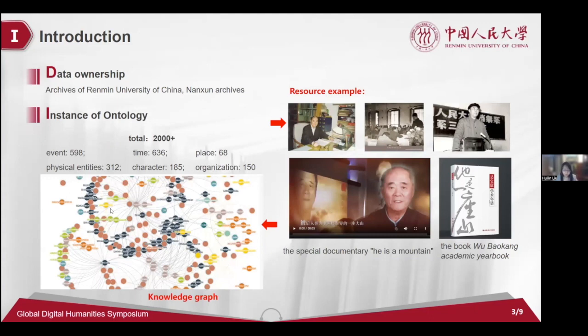Resources include more than 100 photos, thousands of academic papers, monographs, the book Wu Baokang Academic Yearbook, and the documentary He is a Mountain, the Pioneer of Archival Education in New China. Through the processing of these resources, the knowledge graph shown on this slide is finally formed, which totally has more than 2,000 instances.